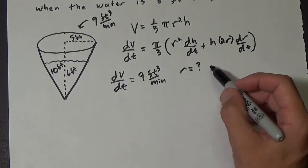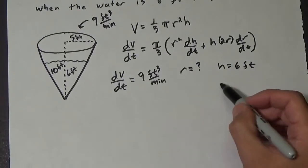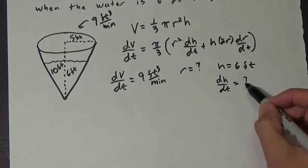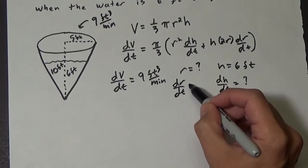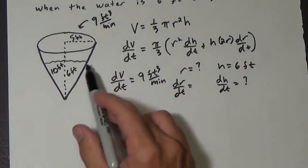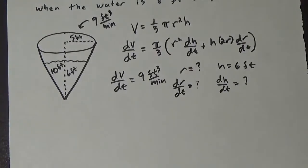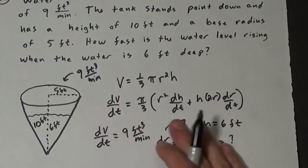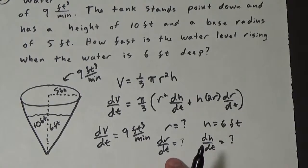h, that's 6 feet. Let's see here, dh dt, that's what we're looking for. And then dr dt. Well, we don't have the rate that the radius has changed. So we got a lot of unknowns here. So it appears that the way this formula is set up and how we looked at it right now, we're gonna have a hard time finding it. So we're gonna need another piece of information.